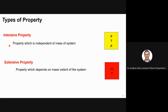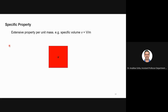Extensive properties depend on the mass or extent of the system. If you take a system of two kilograms and divide it into two, each part becomes half. Examples are mass and volume. Properties that depend on extent or mass are called extensive; those independent of mass are called intensive. Additionally, if you take any extensive property per unit mass, that becomes a specific property, which is also intensive — for example, specific volume is volume per unit mass, in units of m³/kg.